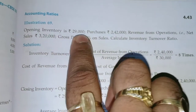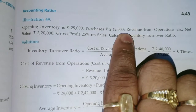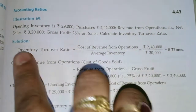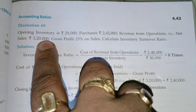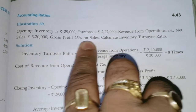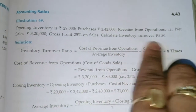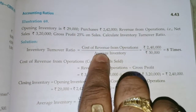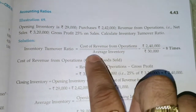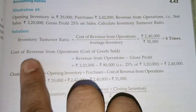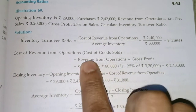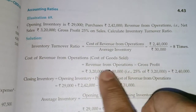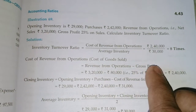This is the formula: Cost of Revenue from Operations divided by Average Inventory. Cost of Revenue from Operations = Revenue from Operations minus Gross Profit.